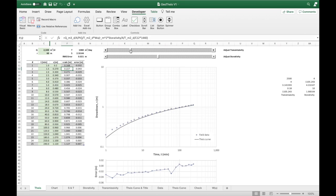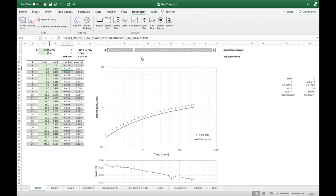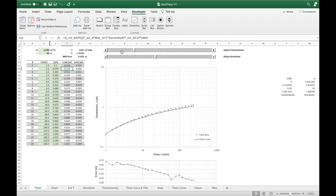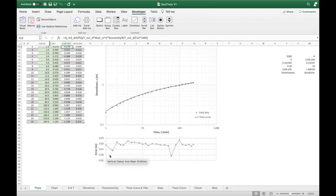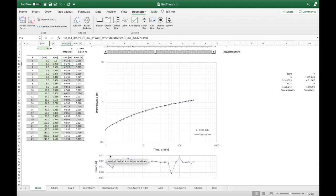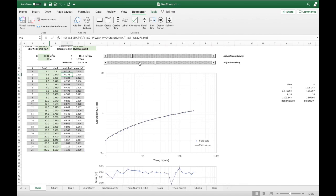I'm almost there. The type curve is parallel to the data, but it's too low. I want to reduce the storativity. You can see I can use the slider, that's for doing quick adjustments, or we just click on it and that makes smaller adjustments.